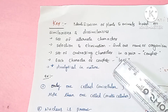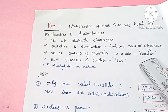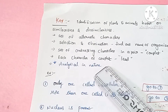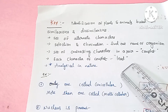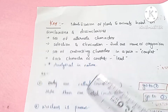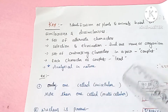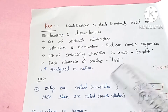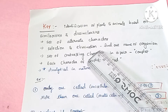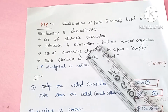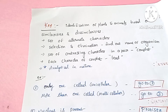A pair has two statements and is called a couplet. Each individual statement or individual character is called a lead. Keys are analytical in nature. By a selection and elimination process — selecting one option and eliminating another — we can find out the names of living organisms.